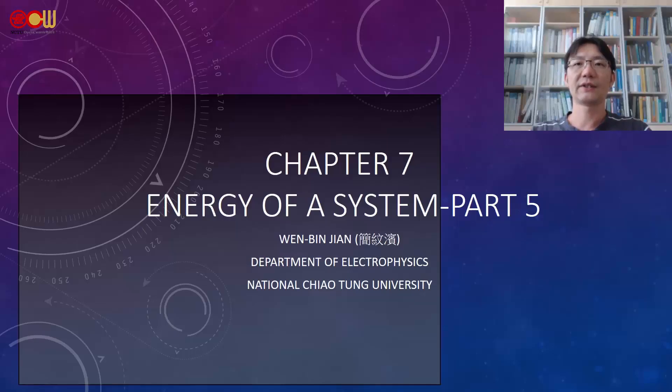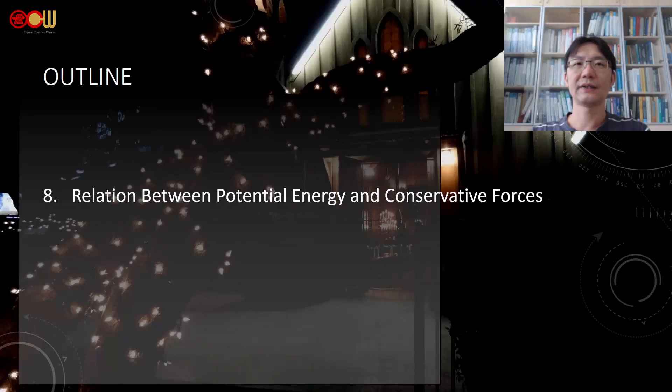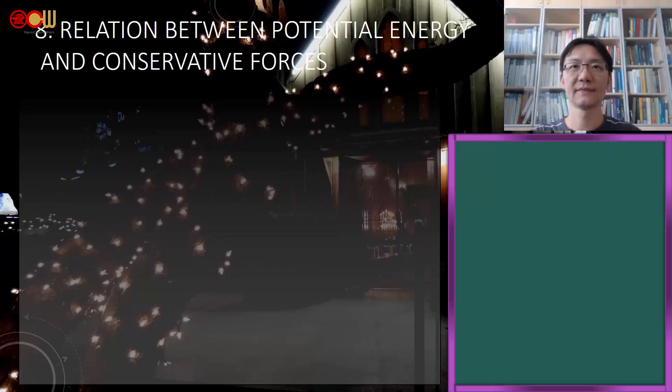Chapter 7 Energy of a System Part 5. The outline covers Section 8: Relation Between Potential Energy and Conservative Force, explaining how to calculate force from potential energy. Section 9: Energy Diagram and Equilibrium teaches how to use assumed known potential energy to analyze systems.